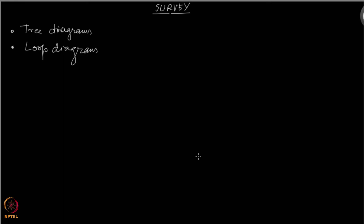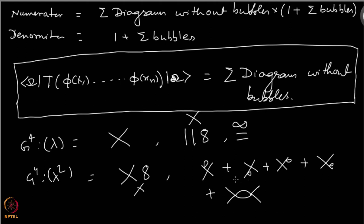Formally, we have written down the expressions of these objects, and to do a computation at, let us say, order lambda squared, you would need to calculate this diagram and other diagrams also.